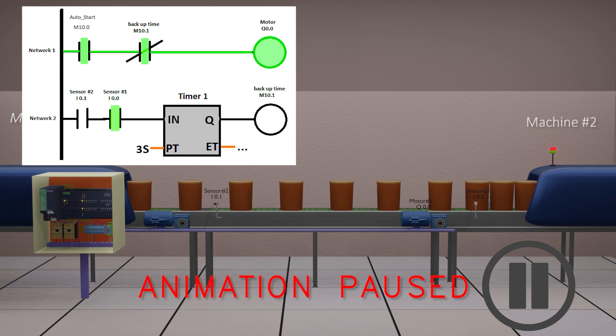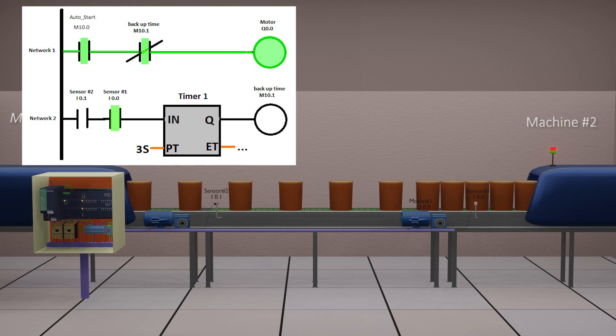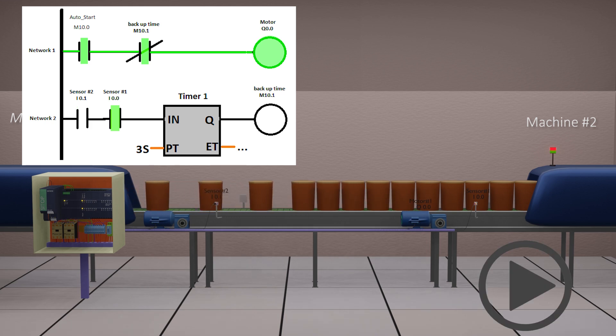Conveyor motor Q 0.0 is still on and buckets start to accumulate on it as the bucket accumulation reaches backup sensor 2. Now both sensors in network 2 are on and this will start the backup timer.